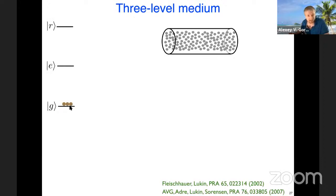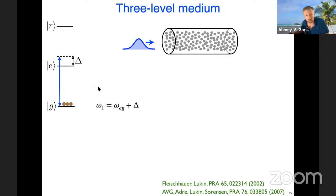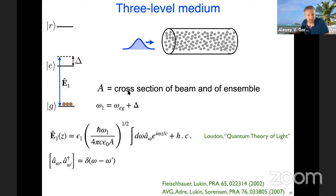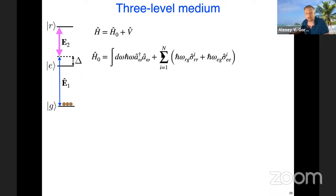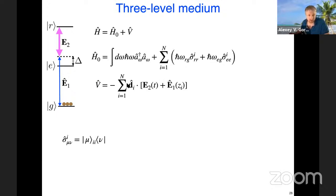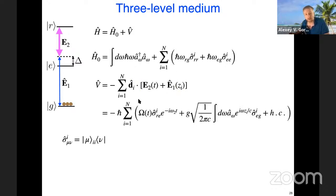We're studying propagation of light through atomic ensembles under the conditions of electromagnetically induced transparency. We have an ensemble of atoms that are three-level atoms mostly starting in the ground state. There's a photon coming in near resonant with this g-e transition, described by a quantum field. Then there's a classical field coupling the e-r transition given by this classical amplitude.